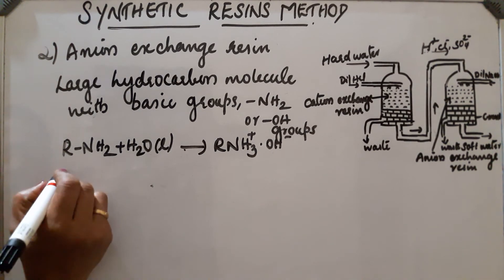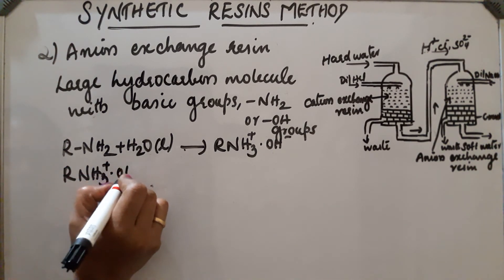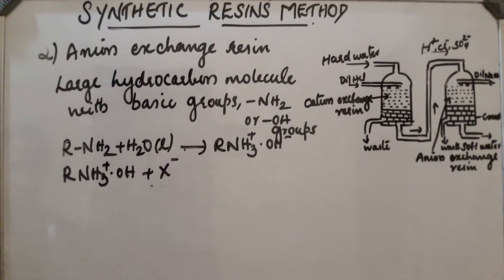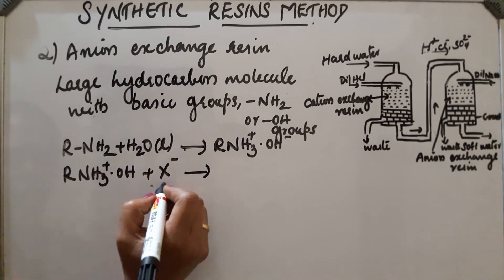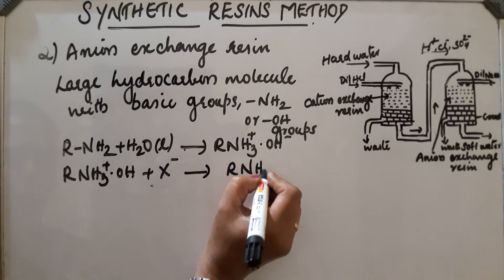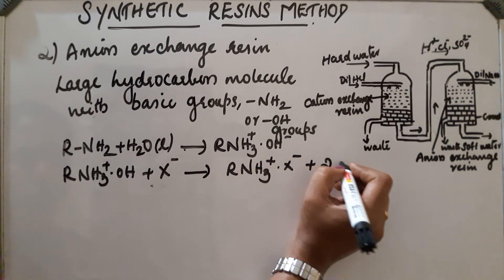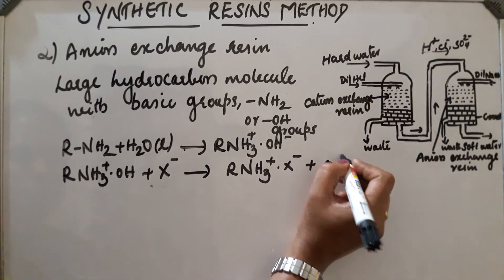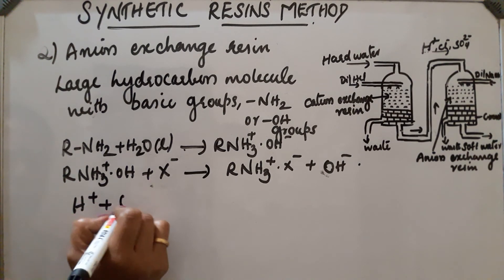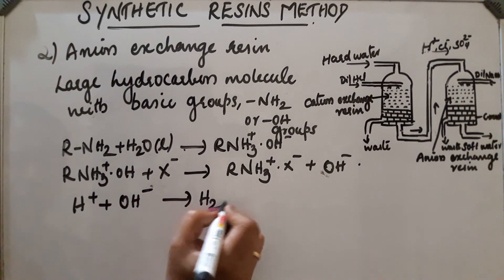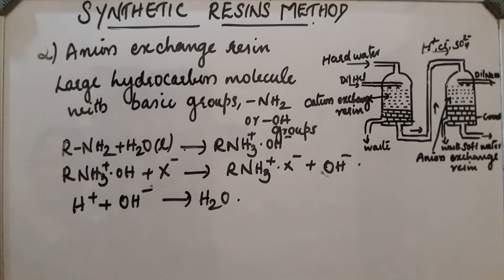Then R–NH3+ OH− reacts with X−, where X− is the anion — it may be Cl−, HCO3−, SO42−, etc. — and all these are removed. The anion exchange takes place: R–NH3+ X− is formed and OH− is released. This OH− ion neutralizes the H+ ions present in the water, forming water. Thus neutralization takes place and anions are removed from the hard water.